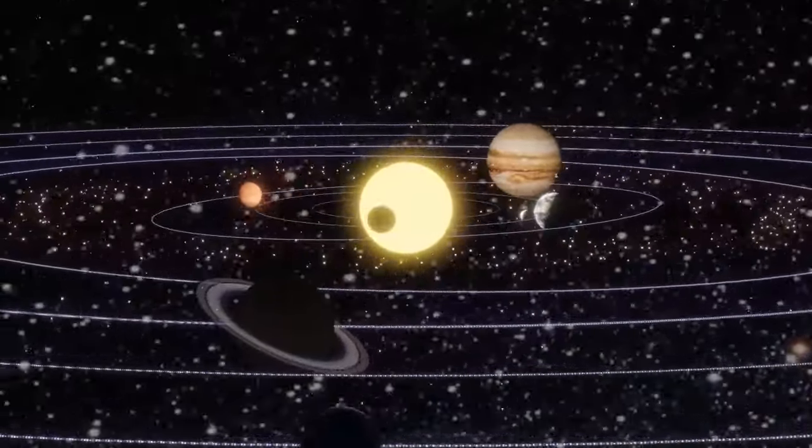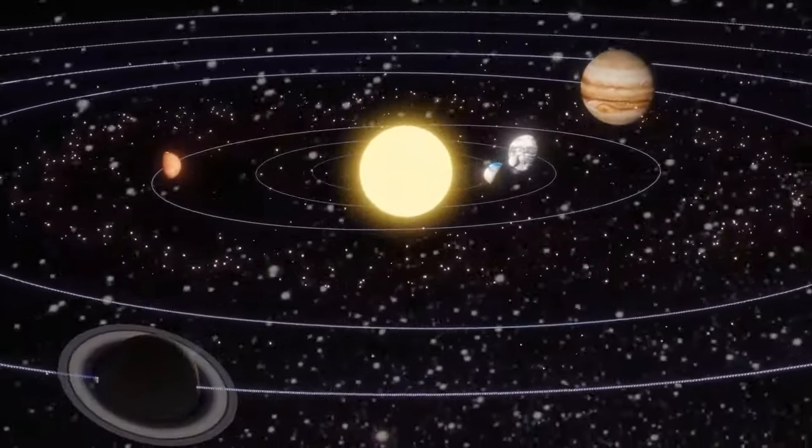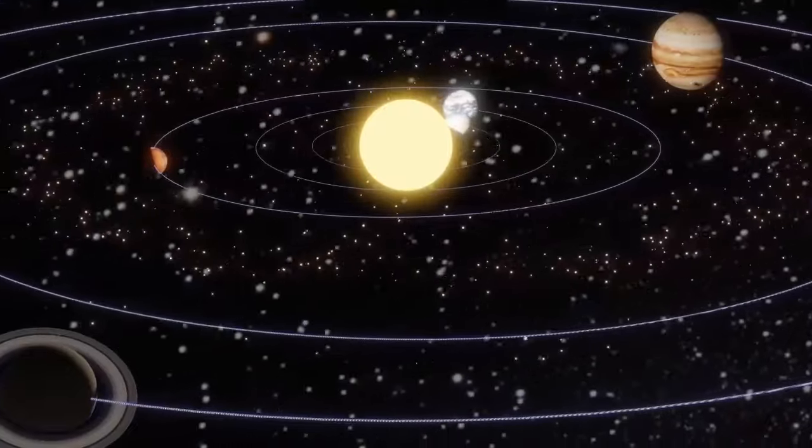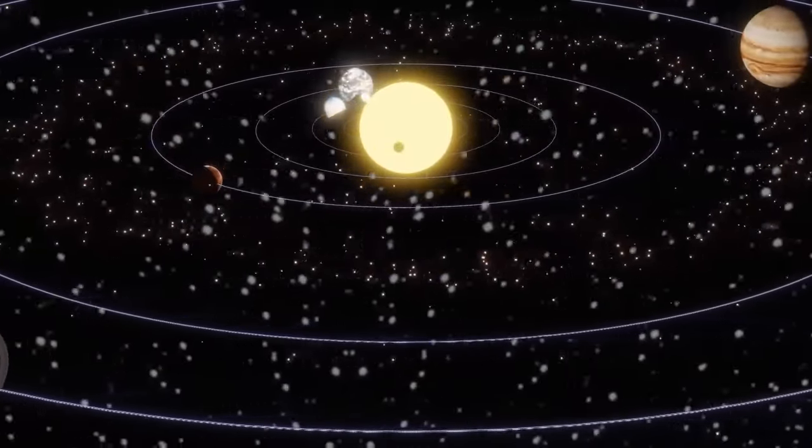Jupiter's massive size can be attributed to its early formation in the solar system. As a gas giant, Jupiter started as a massive clump of gas and dust that rapidly accreted material from the surrounding protoplanetary disk.